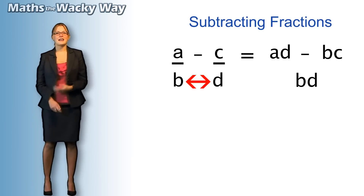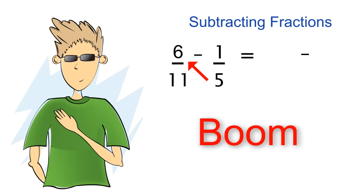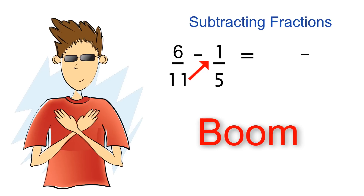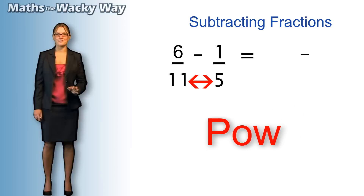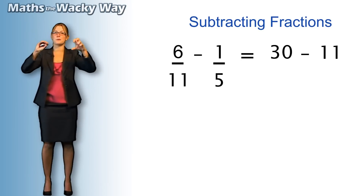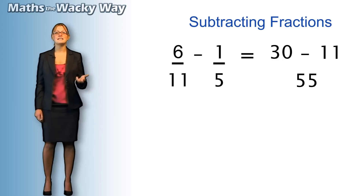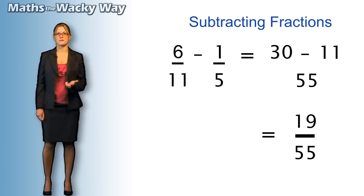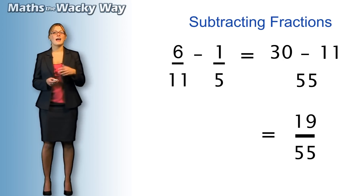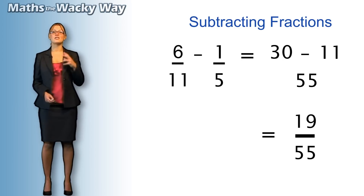So if we have six over eleven take away one over five, we're going to boom with six times five, boom with eleven times one, and pow with eleven times five. Six times five is thirty. Eleven times one is eleven. Those fill the top two boxes. Eleven times five is fifty-five, that goes on the bottom. So we've got thirty take away eleven over fifty-five. Tidying up the top: thirty take away eleven is nineteen — nineteen over fifty-five. Nineteen doesn't appear in our times tables, and five and eleven don't go into nineteen, so this stays as nineteen over fifty-five.